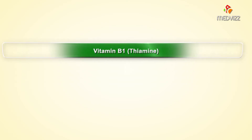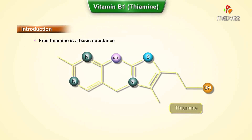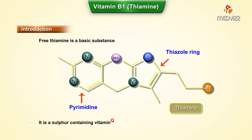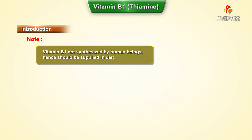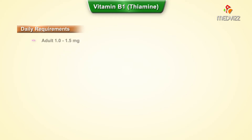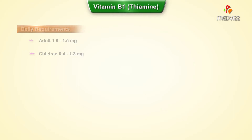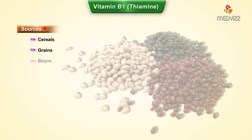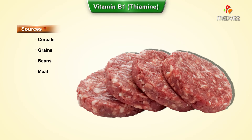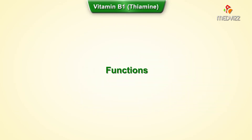Vitamin B1, thiamine, is a basic substance containing a pyrimidine and thiazole ring, making it a sulfur-containing vitamin. It is not synthesized by human beings and must be obtained through diet. Daily requirements are approximately 1 to 1.5 milligrams for adults and 0.4 to 1.3 milligrams for children. Sources include cereals, grains, beans, and meat.